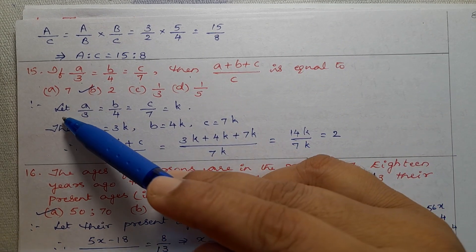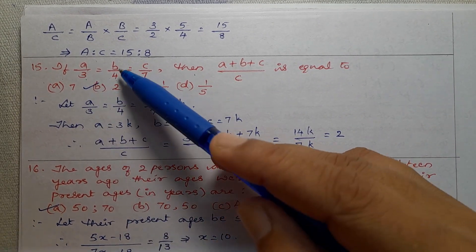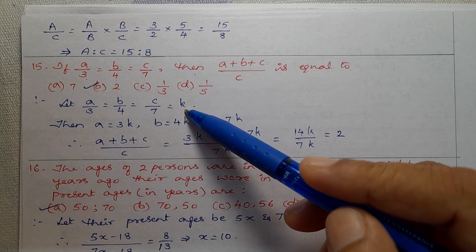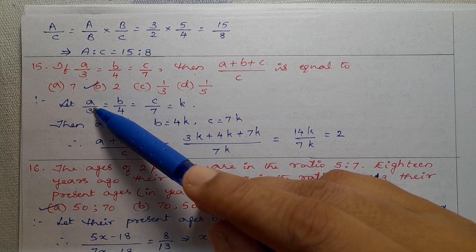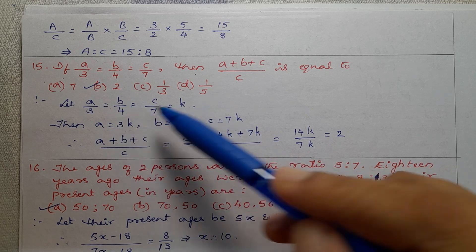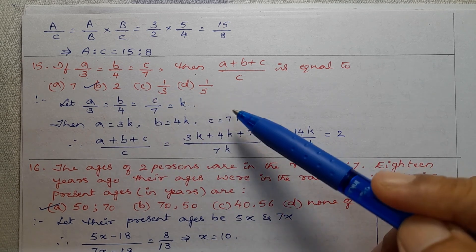First, let the assumption A by 3 equal to B by 4 equal to C by 7 equal to K. Then A by 3 equal to K, B by 4 equal to K, C by 7 equal to K.